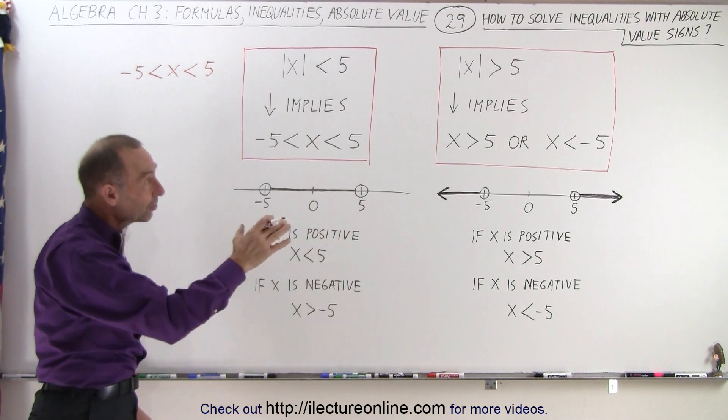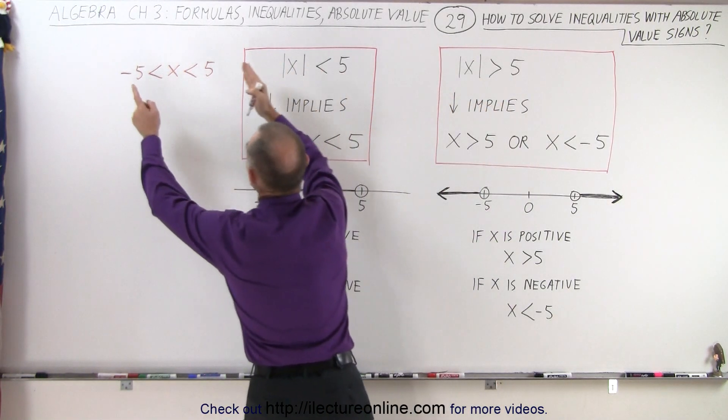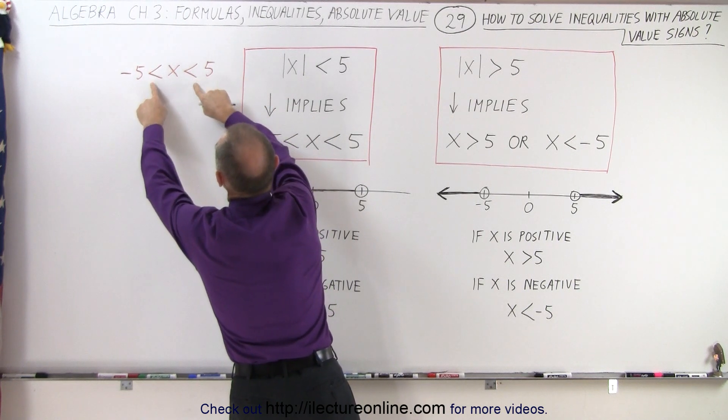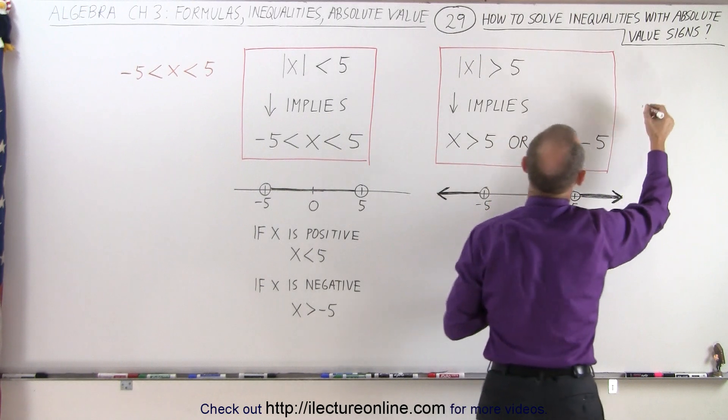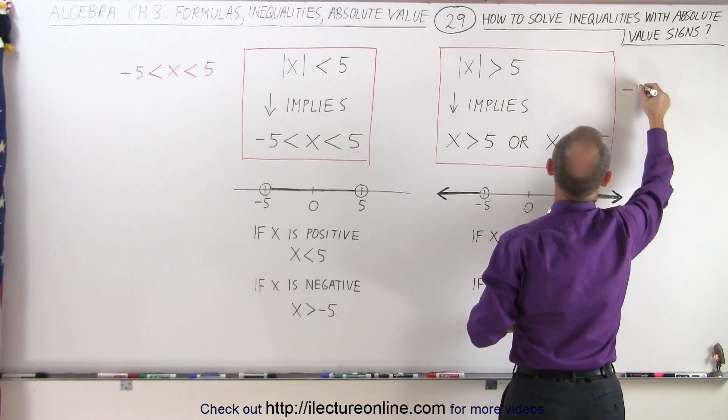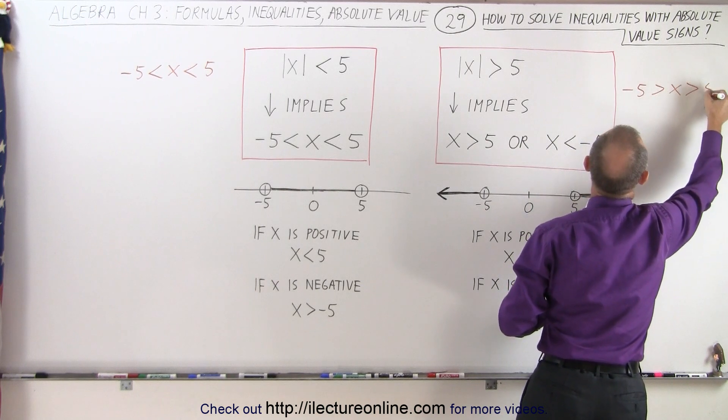However, on the other side, if the absolute value of x is greater than 5, we can write the same thing we have over here, but instead of having the inequality symbols pointed to the left, we're going to have them point to the right. And so we write negative 5 greater than x greater than positive 5.